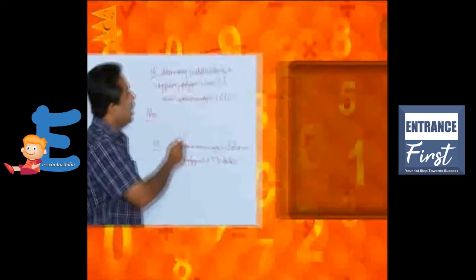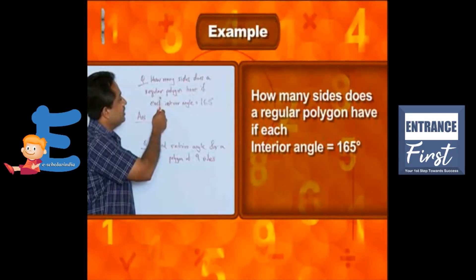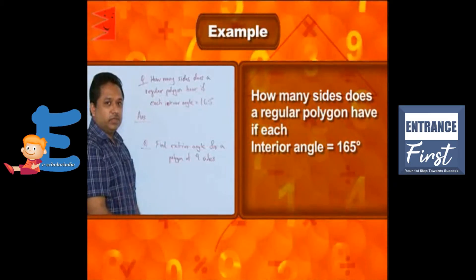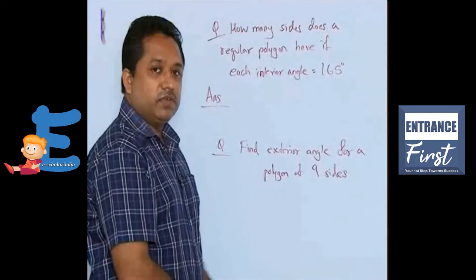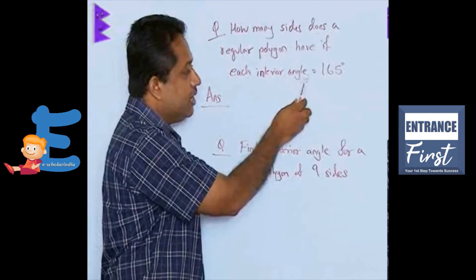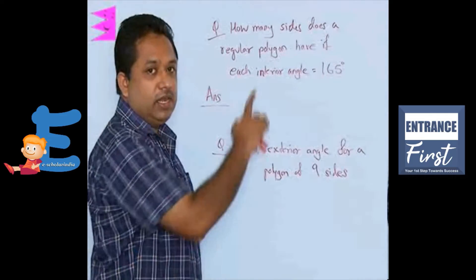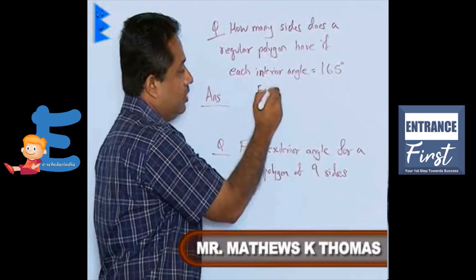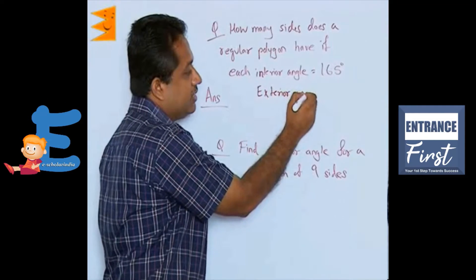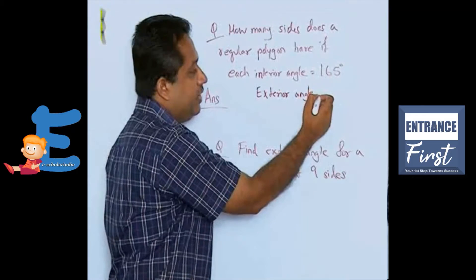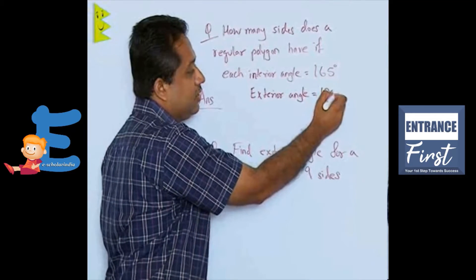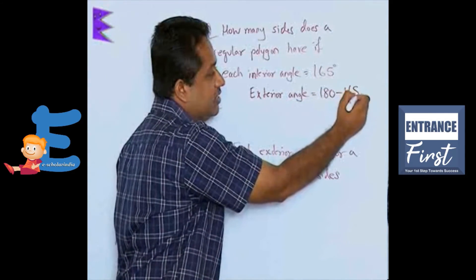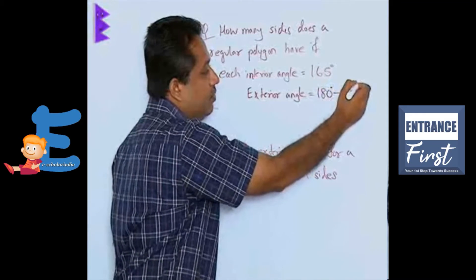The next question: how many sides does a regular polygon have if each interior angle is 165°? The crucial point to observe is whether the interior or exterior angle is given. If the interior angle is given, the exterior angle has to be found by subtracting the interior angle from 180. Since the interior angle is 165°, the exterior angle will be 180 minus 165, which is 15 degrees.